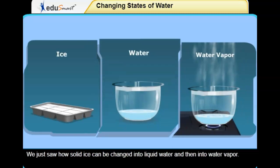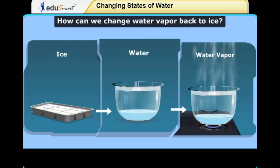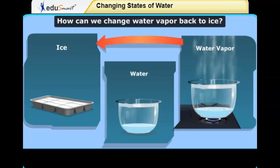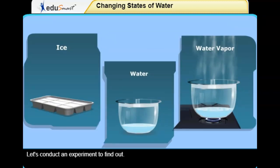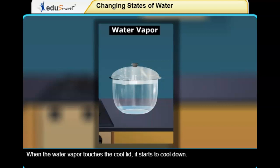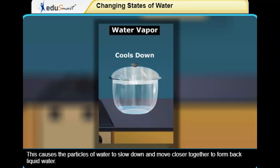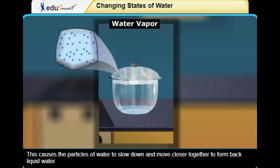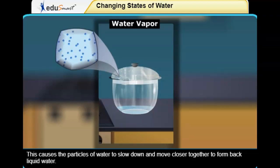We just saw how solid ice can be changed into liquid water and then into water vapor. How can we change water vapor back to ice? Let's conduct an experiment to find out. A cool lid over this hot bowl — when the water vapor touches the cool lid, it starts to cool down. This causes the particles of water to slow down and move closer together to form back liquid water.